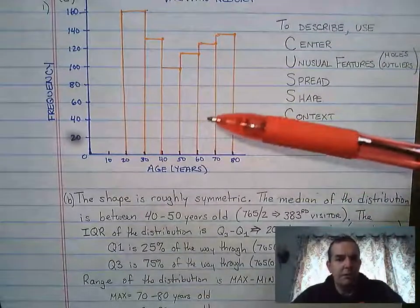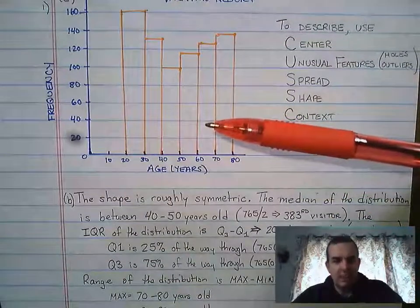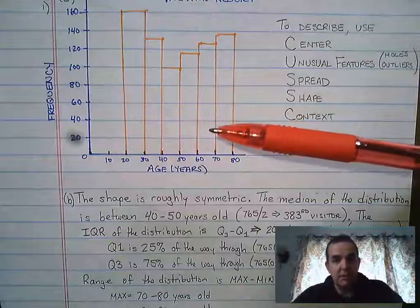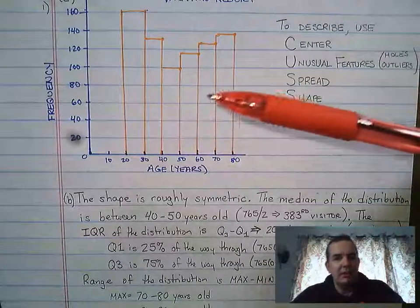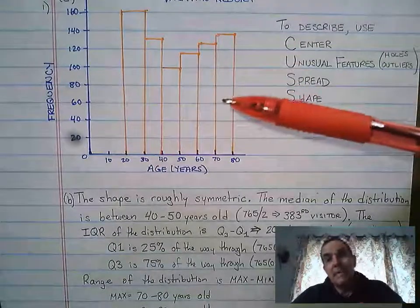So this shape is roughly symmetric. It is roughly symmetric. It's not our typical roughly symmetric, but it is roughly symmetric. Rather than use mean, which is much more difficult to calculate from a histogram or the data provided, we're going to use median.